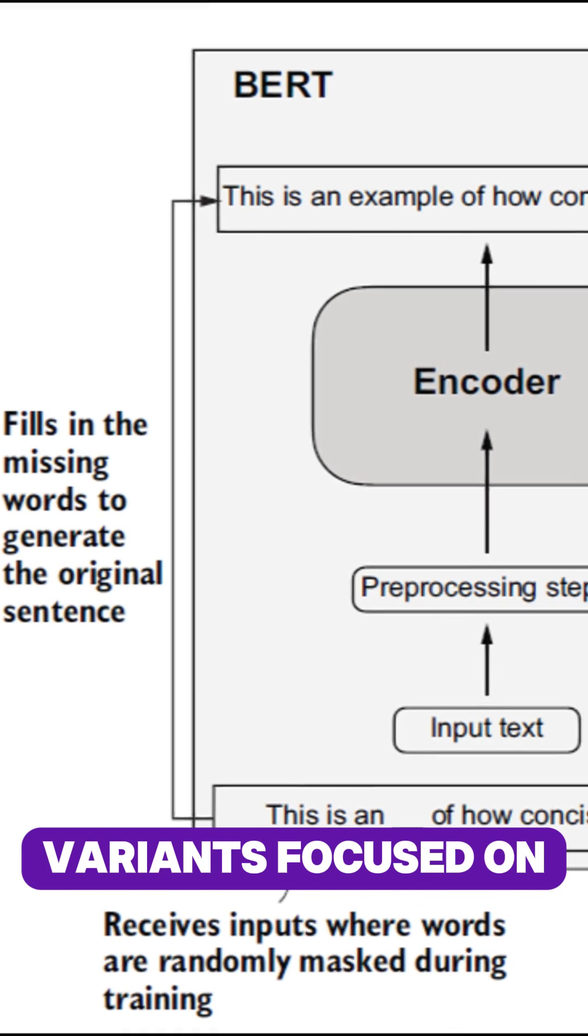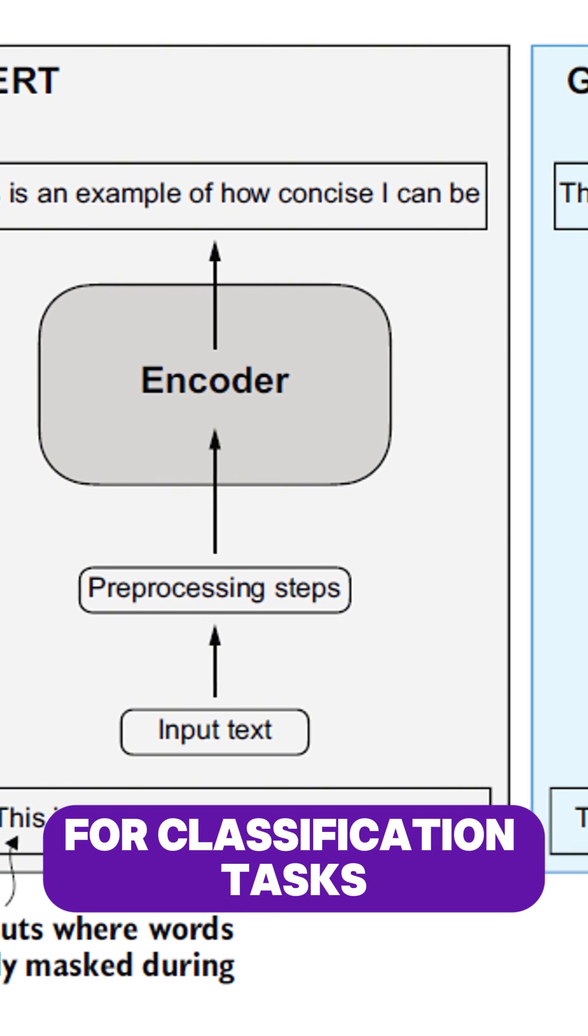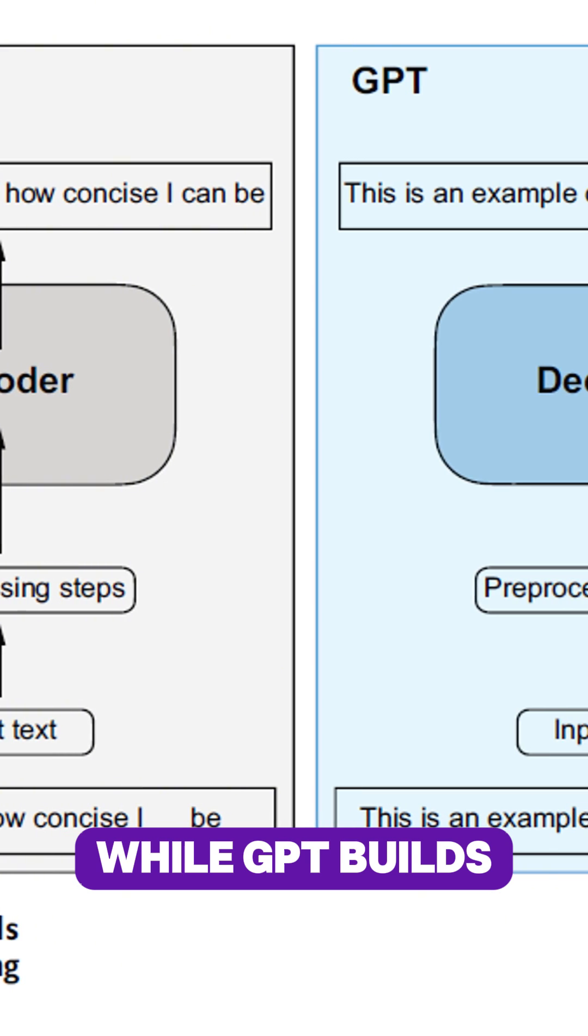Later variants focused on different parts of the transformer. BERT builds on the encoder and is great for classification tasks like sentiment analysis while GPT builds on the decoder.